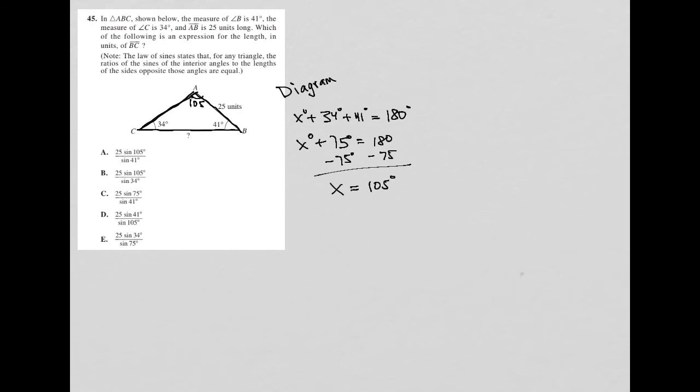So the question says, in triangle ABC, shown below, the measure of angle B is 41 degrees, the measure of angle C is 34 degrees, and AB is 25 units long. So we saw all of that already. Which of the following is an expression for the length in units of BC? So the question mark.